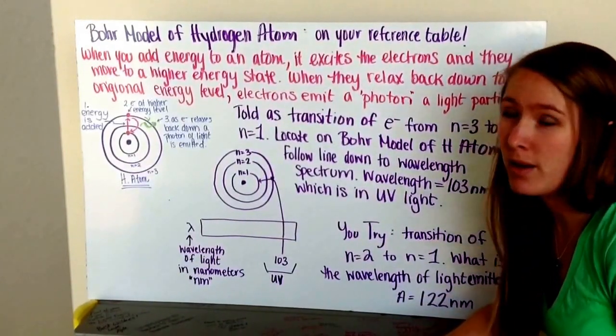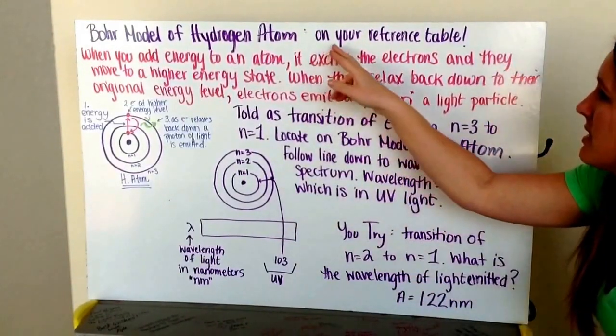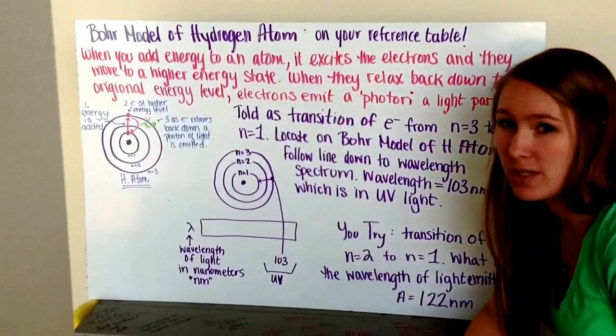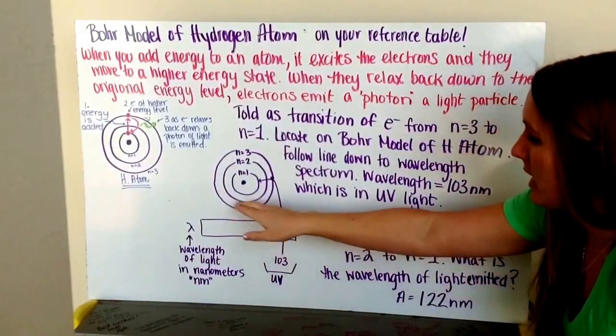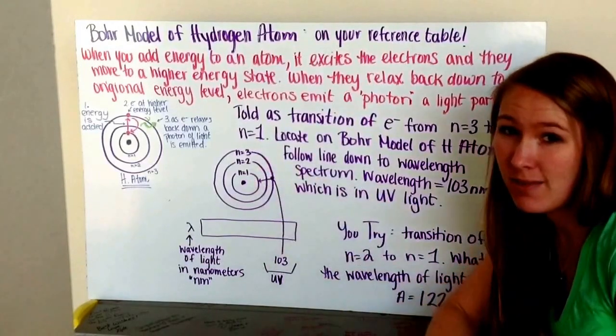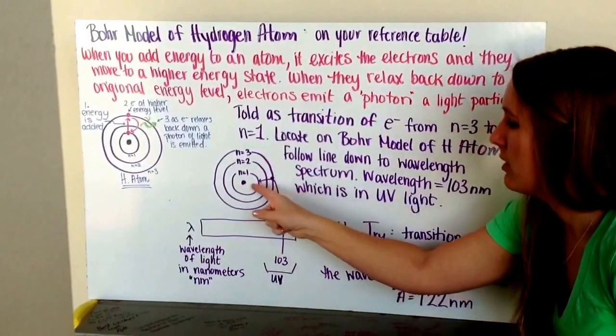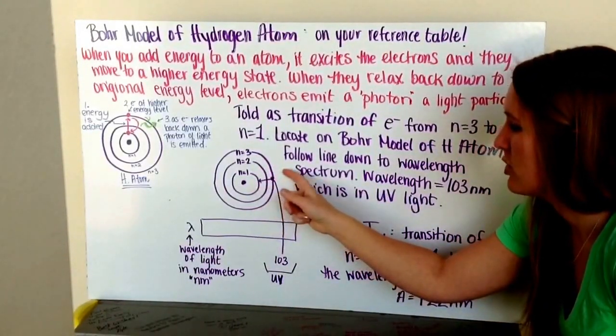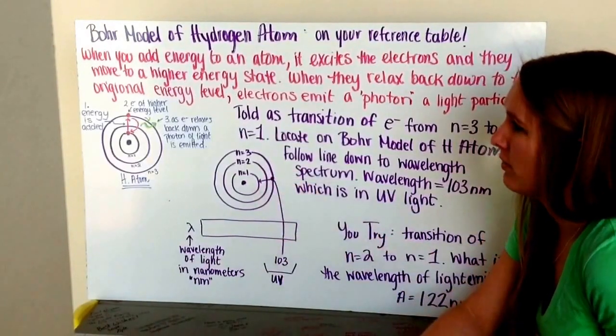There's also the Bohr model of the hydrogen atom, and this is on the backside of one of your reference tables. It looks something like this, where you have the nucleus in the center, the rings coming out, all seven rings are there. And it shows you electron transformations, or transitions, from one energy level to the next.